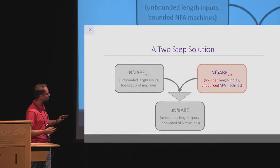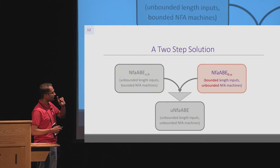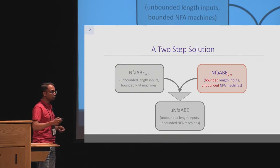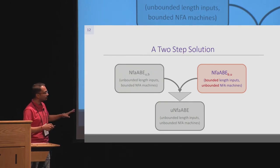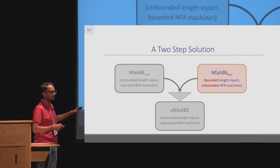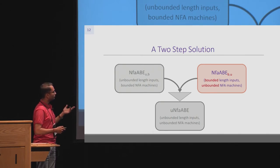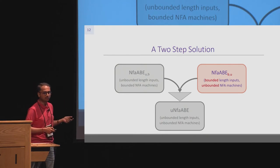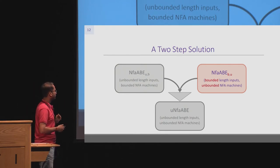Now let's look at how to construct the B,U primitive. The attribute length is now bounded, so it is known to the setup algorithm, and therefore to the key generator and encryptor. We can employ a circuit ABE scheme directly to convert NFAs into circuits and instantiate it. We just need to ensure that, because we want to handle unbounded size NFAs, we have a depth guarantee on these circuits for NFAs of any arbitrary size. For that we can again use the same divide and conquer technique.